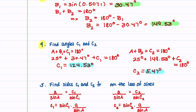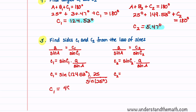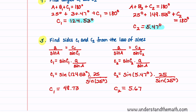Our last step is to find C1 and C2 using the law of sines. C1 equals sine of 124.53 degrees times A, which is 25, divided by sine of 25 degrees. Plugging this into the calculator gives C1 equal to 48.73. We find C2 similarly: sine of 5.47 degrees times 25, divided by sine of 25 degrees, gives C2 equal to 5.67.